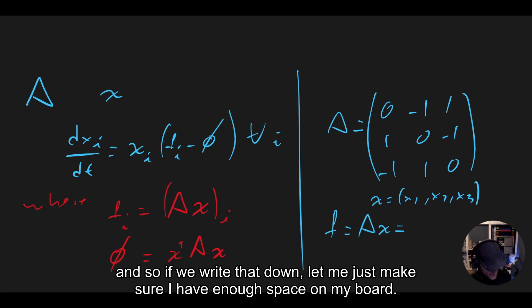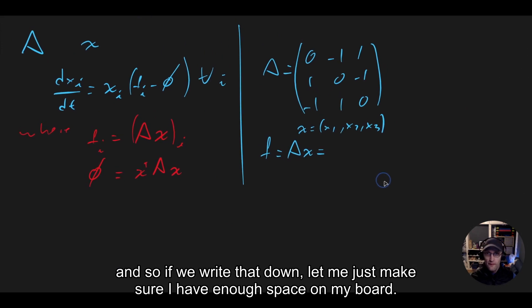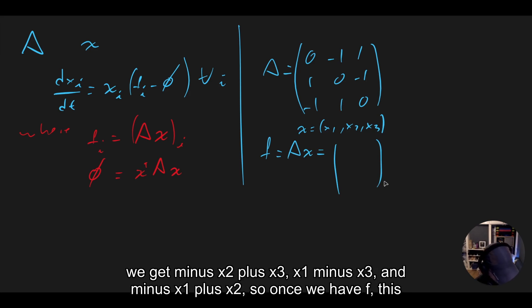And so if we write that down, let me just make sure I have enough space on my board. If we write that down, we get the following, just by a basic linear algebraic manipulation. We get [-x2 + x3, x1 - x3, -x1 + x2].